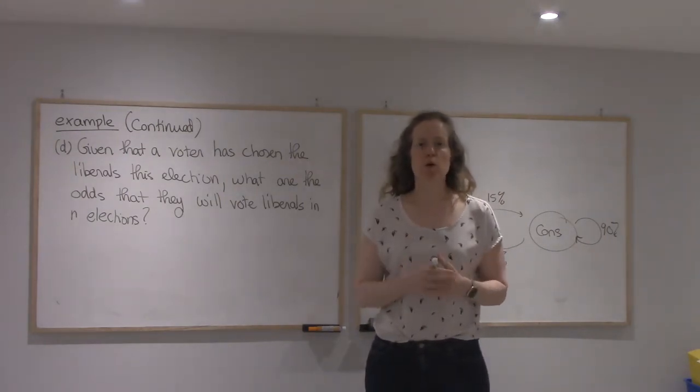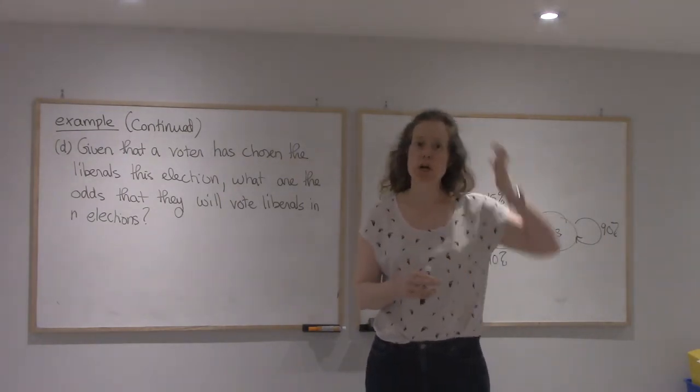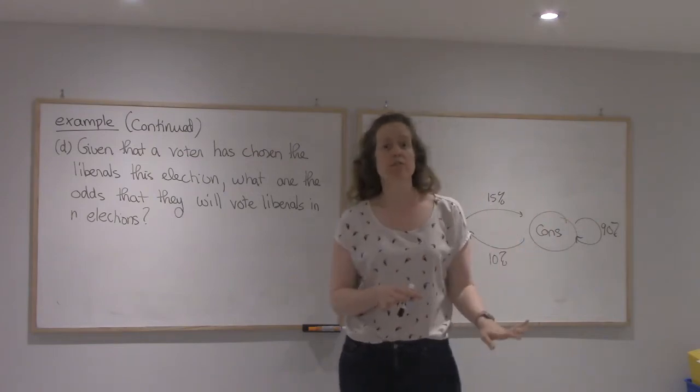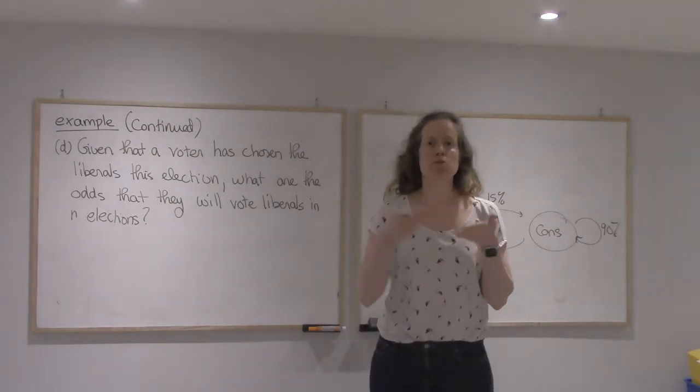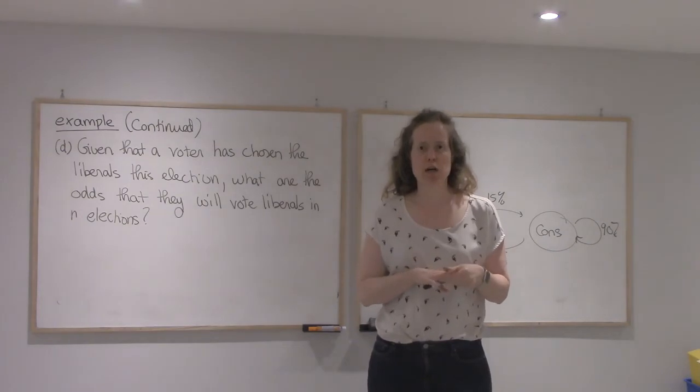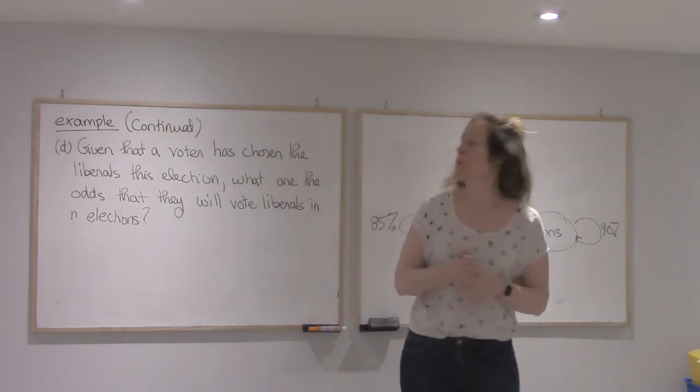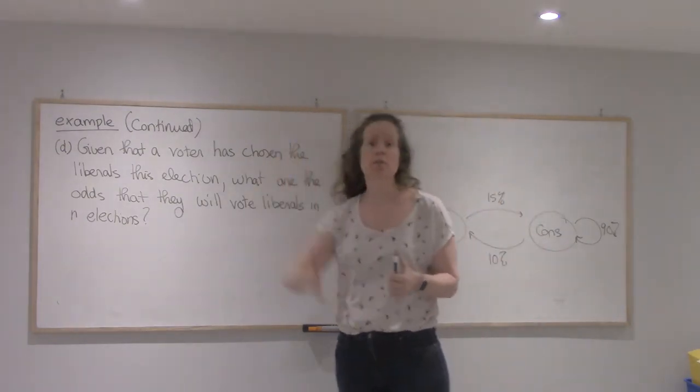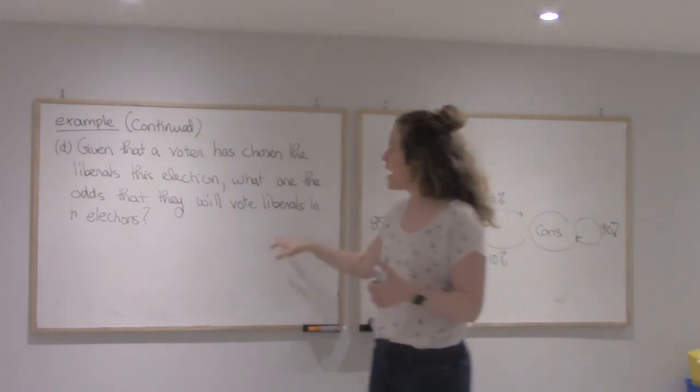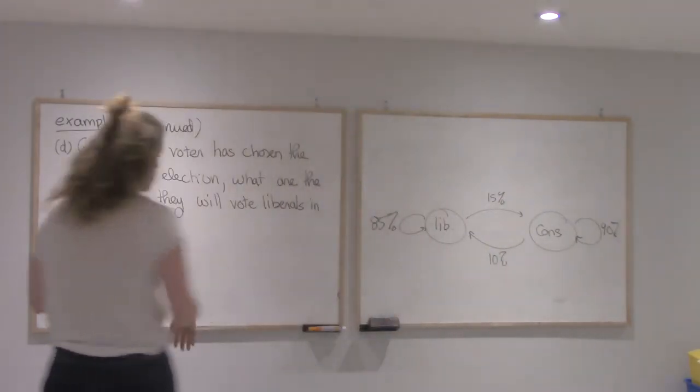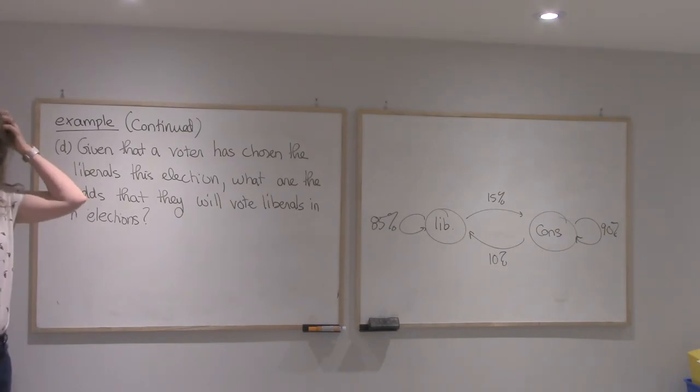All right, in this video we'll continue the example that we started with, the Liberals versus Conservative example, but this time we'll use more powerful linear algebra. We'll start with this question. I'm going to assume that the voter has chosen the Liberals this election and I want to know what are the odds that they will still vote Liberals n elections from today.